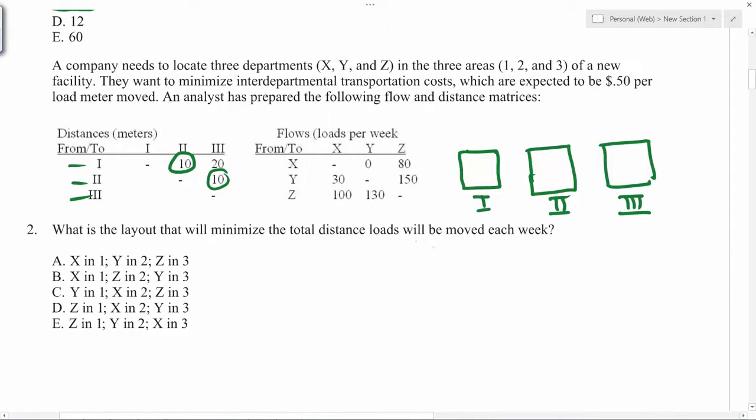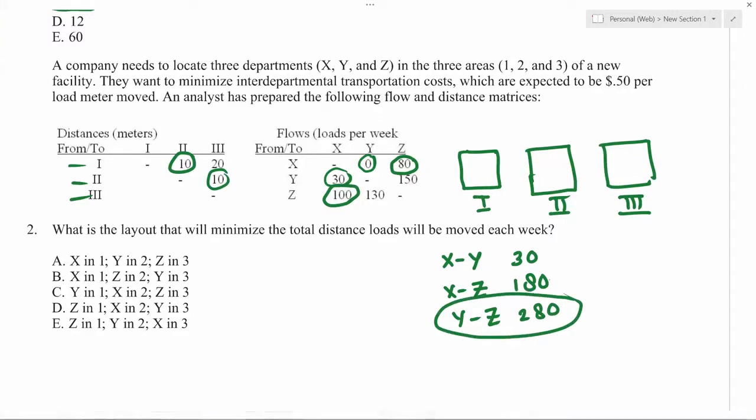What is the layout that will minimize total distance loads will be moved? If you look at X to Y, the total load that moves is zero and thirty, so total is thirty. Similarly, X to Z you have eighty and Z to X you have hundred, so the total is 180. The last one is Y to Z, so that will be 150 plus 130, so 280. The maximum load is between Y and Z, so they should be together.